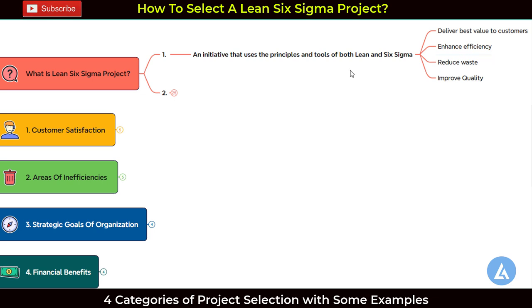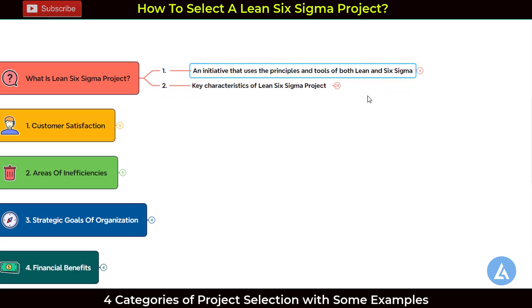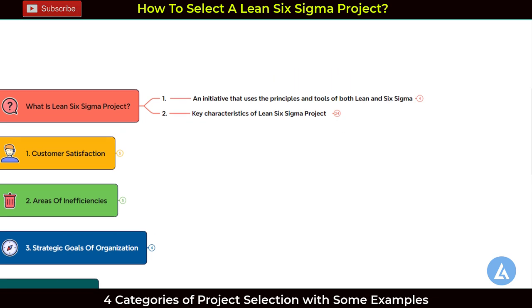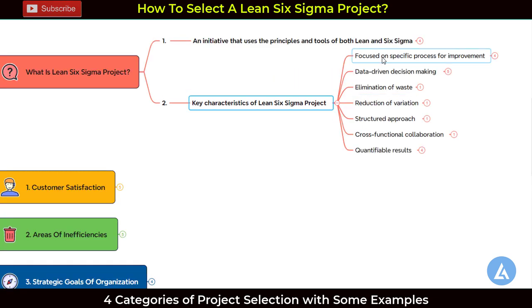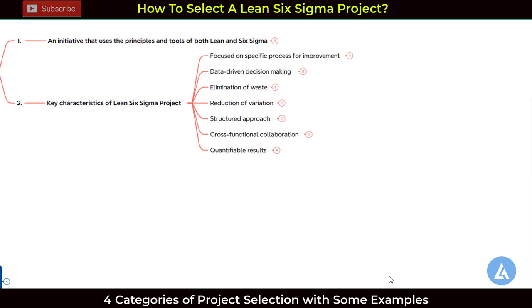The next question is: what is the difference between activities and a project? I'm going to explain the seven important key characteristics of the Lean Six Sigma project so you have complete clarity. The first characteristic is that it is focused on a specific process for improvement — instead of the entire business, we focus on the process most critical at that particular point in time.